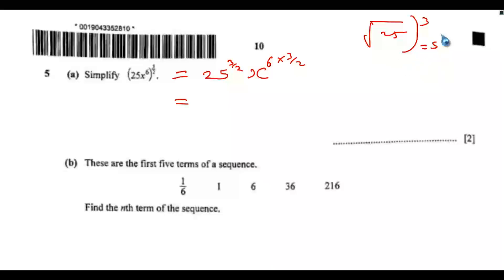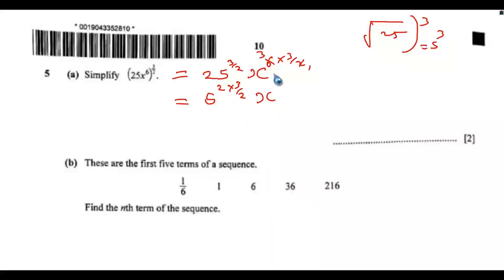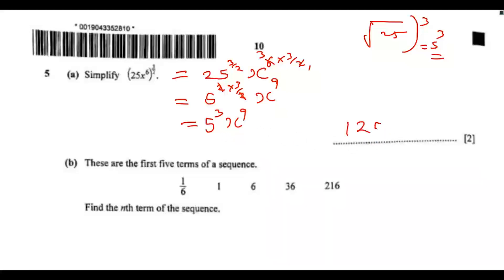So you can write it like that, and this will give you 5 to the power of 3. Alternatively, you can write 25 to the power of 1/2 — that would be 5 — then multiply by 3 over 2. For x: 6 times 3 over 2 gives 9 (the 2s cancel). So we still get 5 to the power of 3, which is 5 × 5 × 5 = 125, then x to the power of 9.